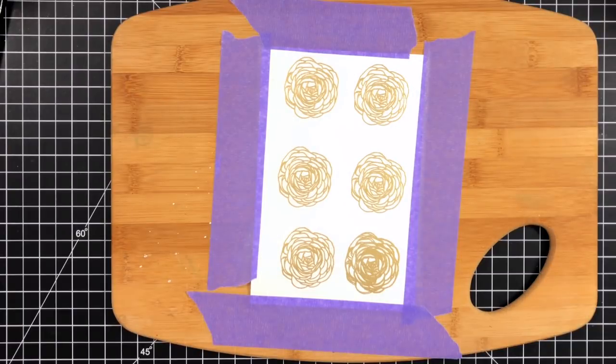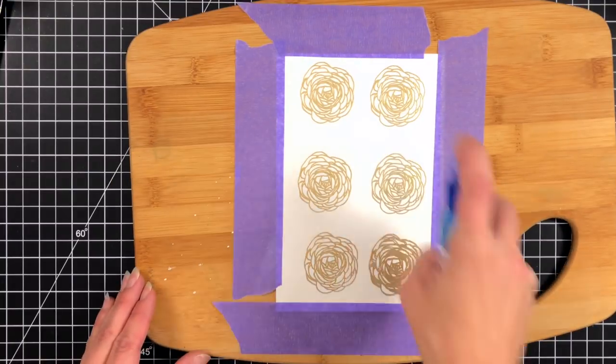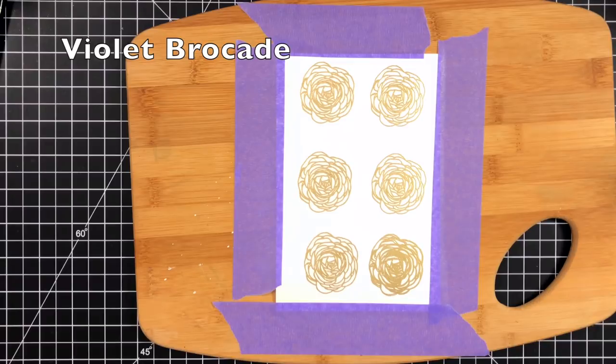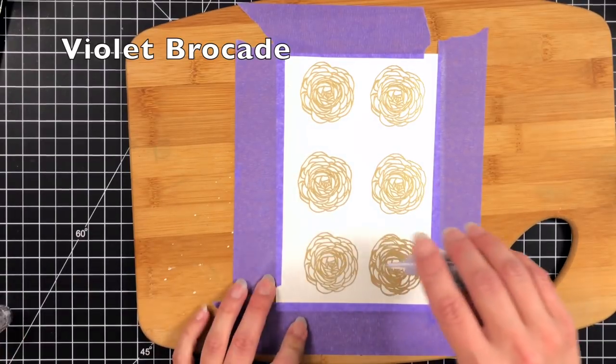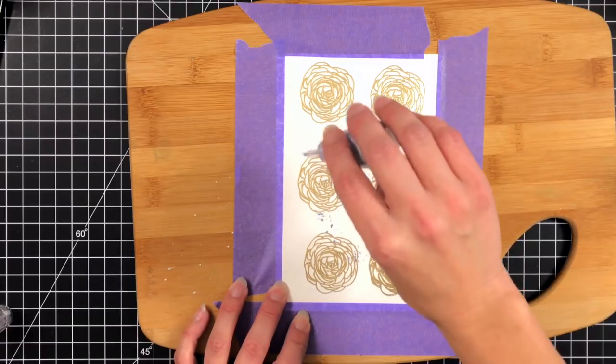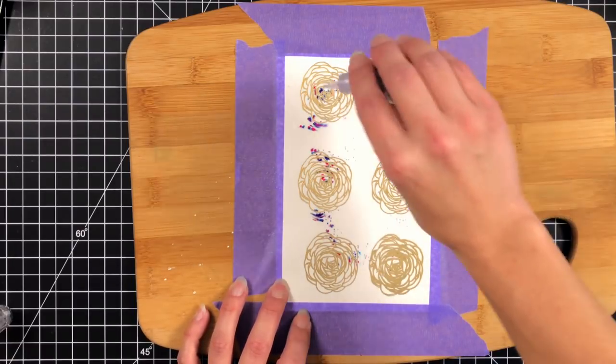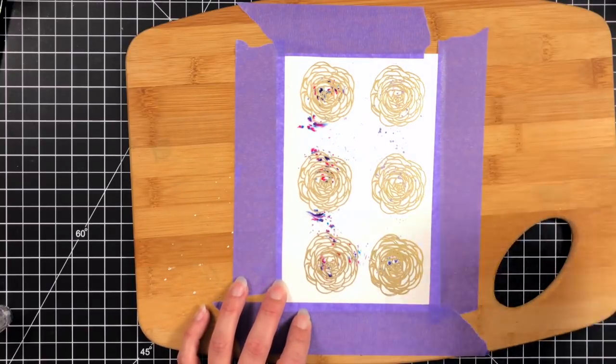I'll melt those down till they're nice and shiny and let that sit for a couple minutes to cool off. Once my panel was cooled off, I taped it down to a wooden board with some purple tape. I'm wetting the entire background and I'm going to use some violet brocade. This is shimmer powder and to me this is kind of a cheater's way of watercoloring.